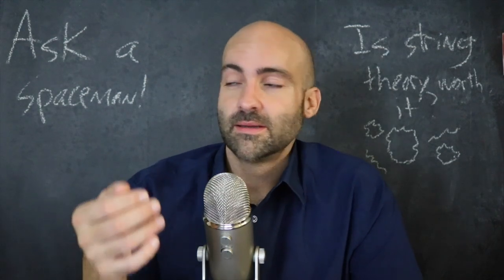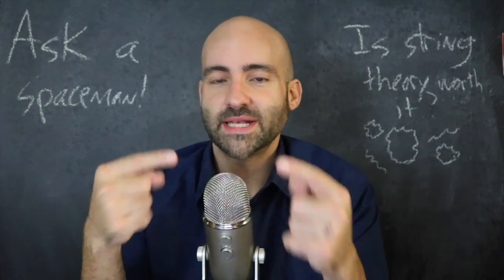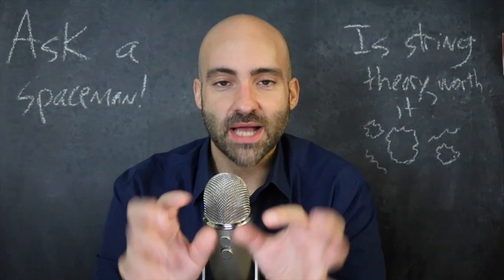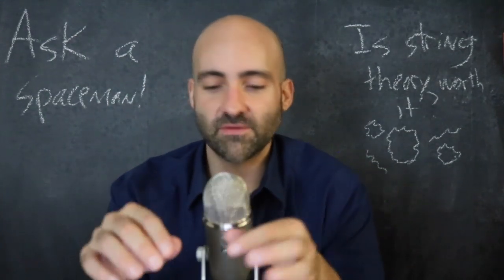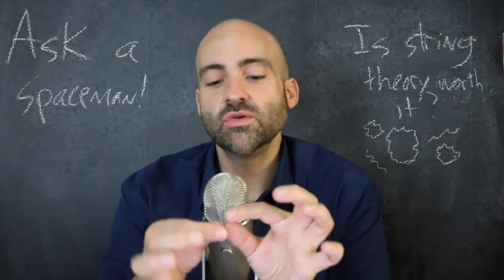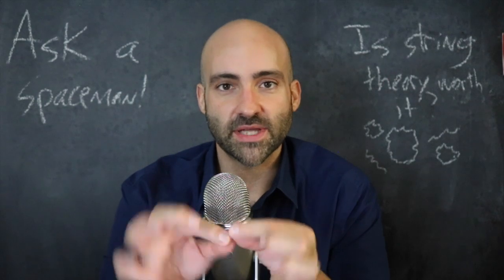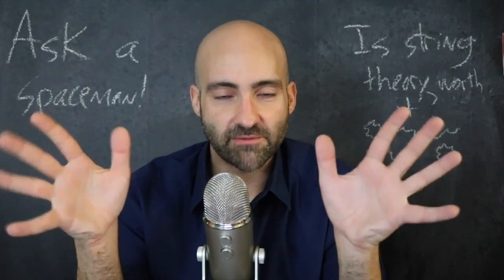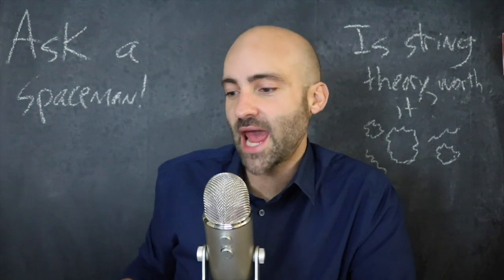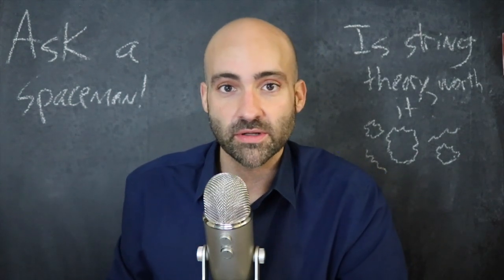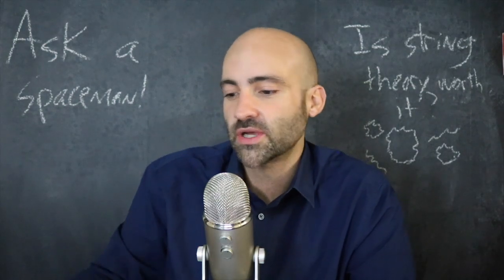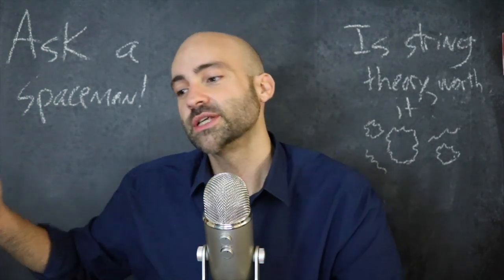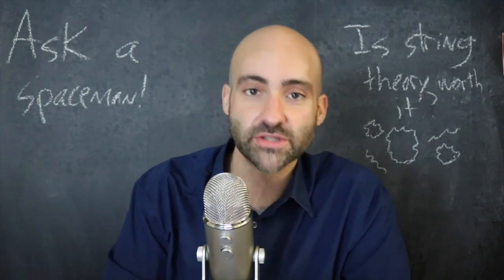And what makes this really interesting, why we care about the shape of these little compact dimensions, which Calabi-Yau manifold matters, is because if you arrange the tiny curled-up dimensions differently, that changes how the strings are going to vibrate. And how the strings vibrate determines how they appear in our everyday world—what they look like, their range, their masses, their spins, their electric charge—all determined by the vibration. But the vibration is determined by the geometry of the tiny curled-up dimensions.